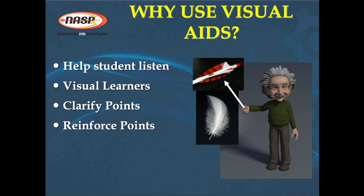Visual aids will help you reinforce points. Let's say you've shown them how to change the draw weight on a Genesis bow by using an Allen wrench to turn limb bolts. Now you bring somebody up and let that person actually use that Allen wrench to change the draw weight — you have just reinforced how to do that with that student and the rest of the class.